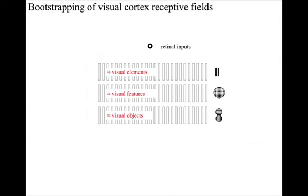We'll start with the visual areas. Genetic information here could define how the connectivity from the retina through the various visual areas is organised initially, so that receptive fields of the appropriate complexity are defined.